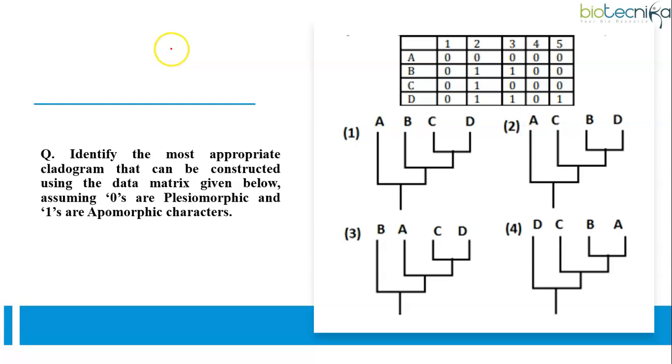Another type of question which can be asked is again figure-based. But along with it, they can give you a data matrix or character table. One such question is shown here. Question is identify the most appropriate cladogram that can be constructed using the data matrix given below, assuming 0 are plesiomorphic and 1s are apomorphic characters. To answer such questions, you have to learn how to read this data matrix or analyze this data matrix or character table. And based on analysis of this data matrix, you have to learn how to identify the most appropriate cladogram.